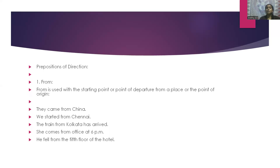The next type is prepositions of direction. The first word is 'from'. From is used with the starting point or point of departure from a place, or the point of origin. For example: they came from China. We started from Chennai. The train from Kolkata has arrived.